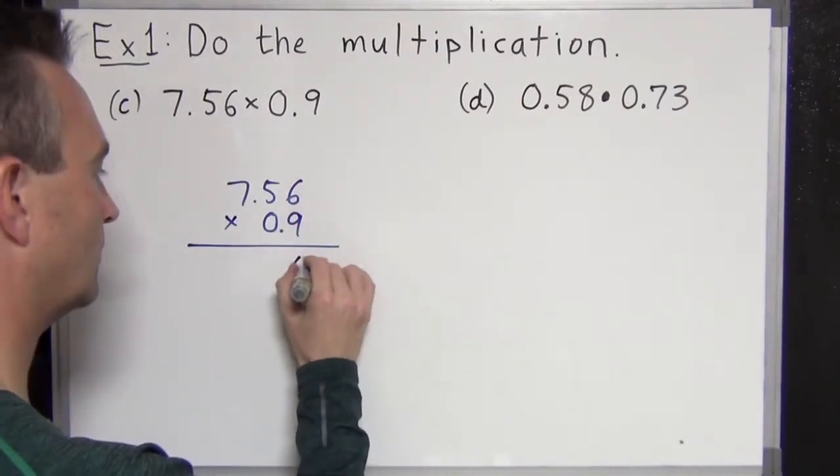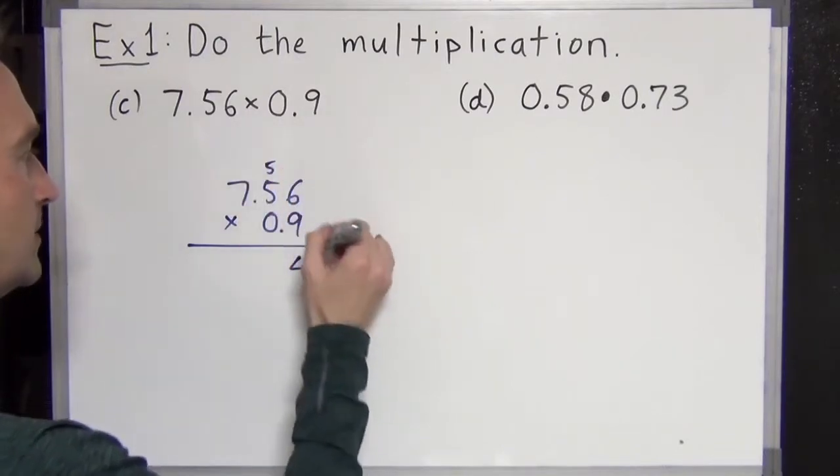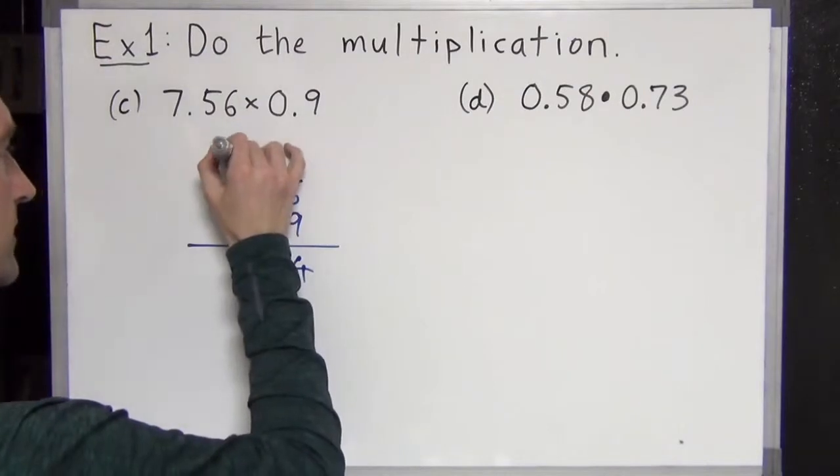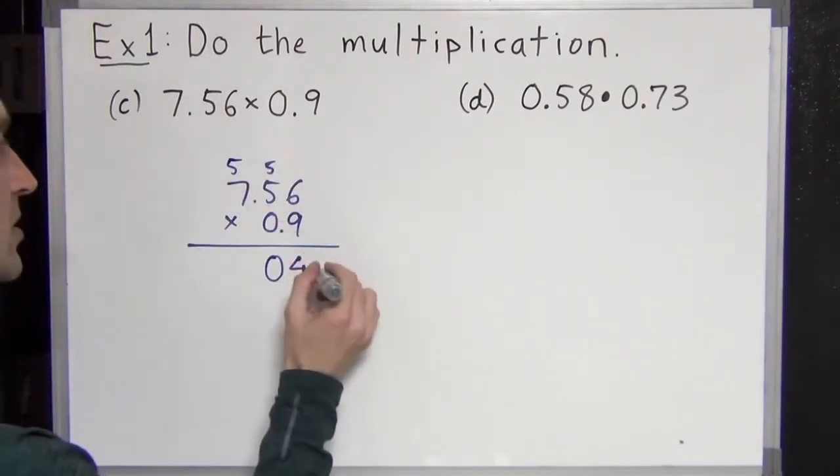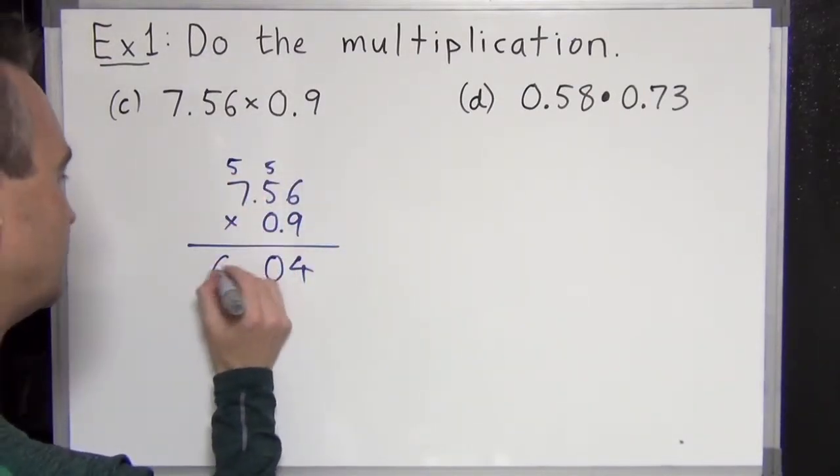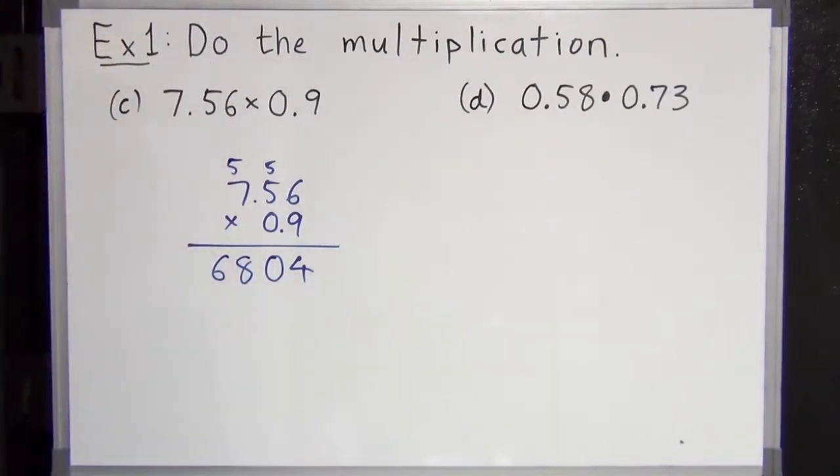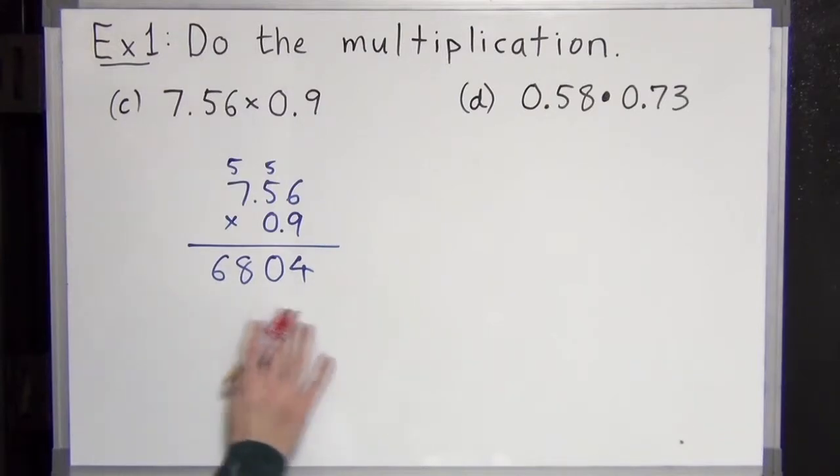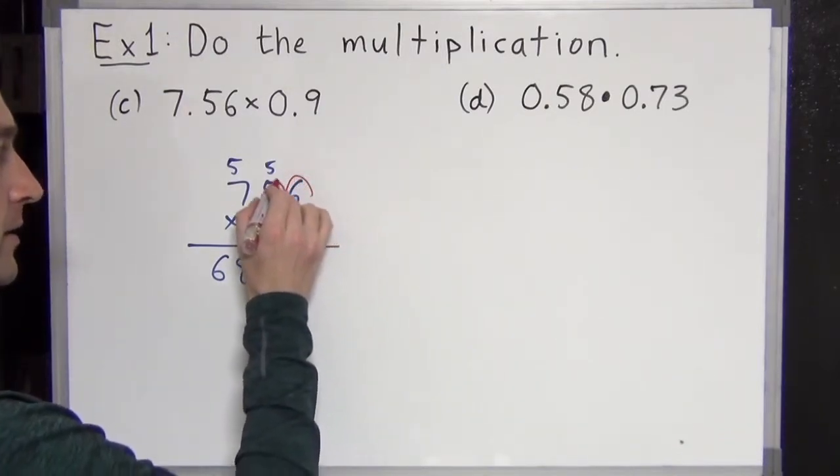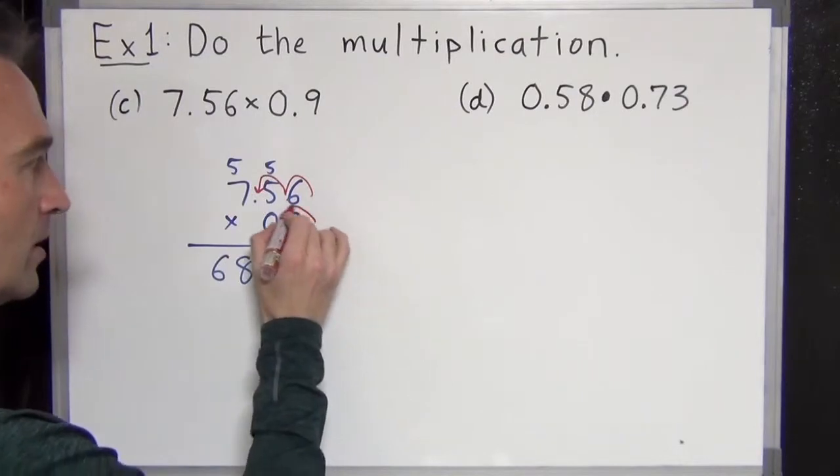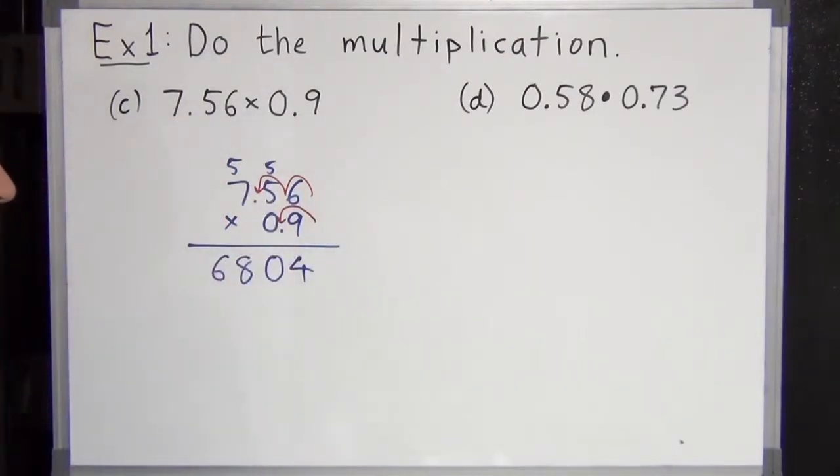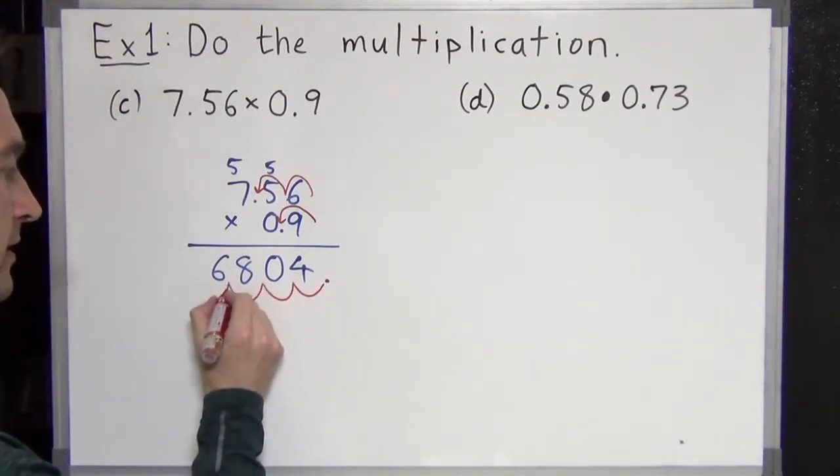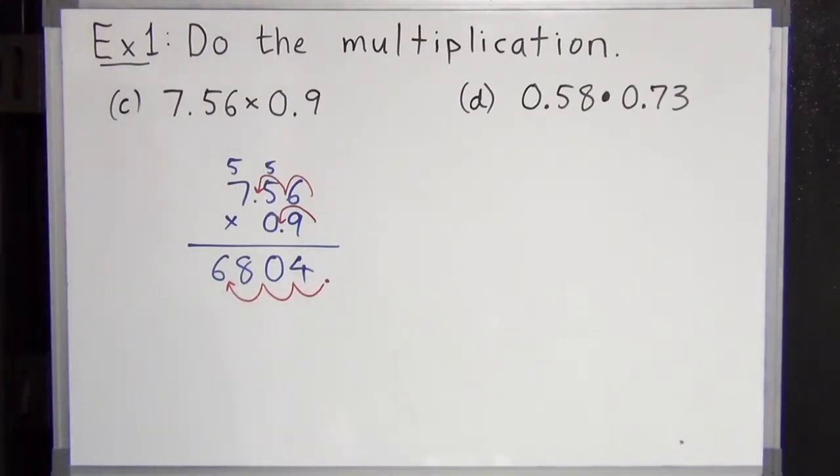Six nines are 54. Four goes down. Five comes up. Five nines are 45 plus five is 50. Zero goes down. Carry the five. Seven nines are 63 plus five is 68. 6,804. No, it's not. We're going to count how many decimal places are going to be in the final answer. Let's count them in the question. One, two, three decimal places total in the question. So when the answer's starting here, we need three decimal places. One, two, three. There's our answer. Six point eight zero four.